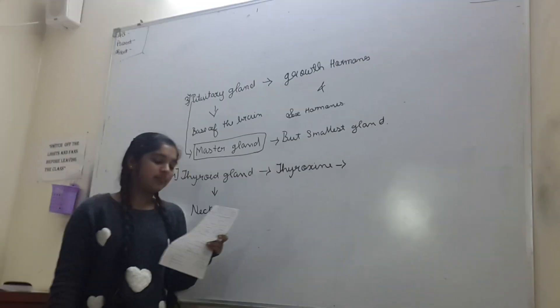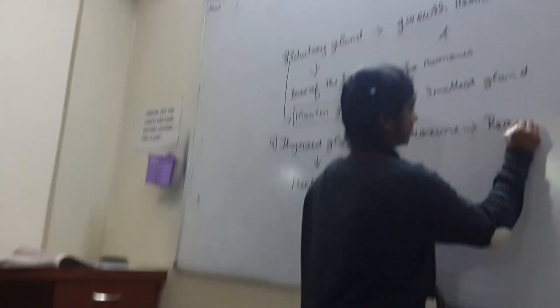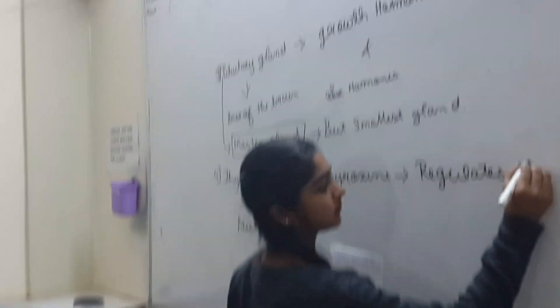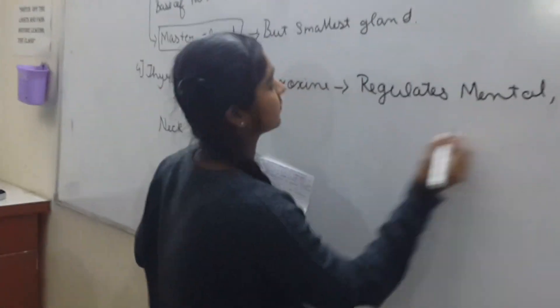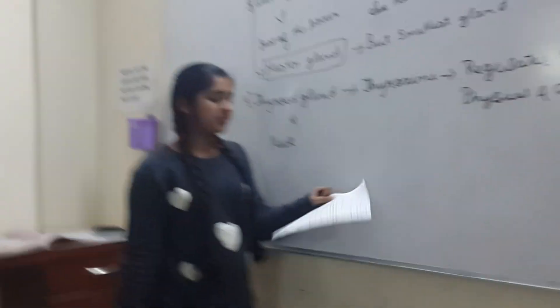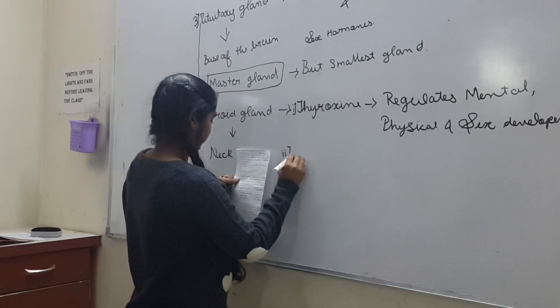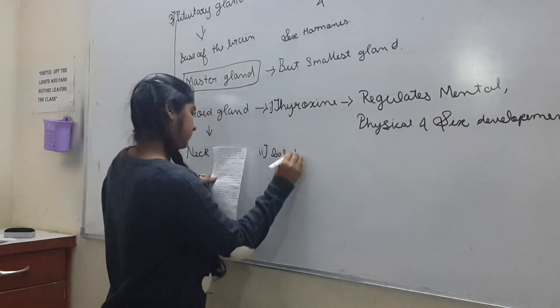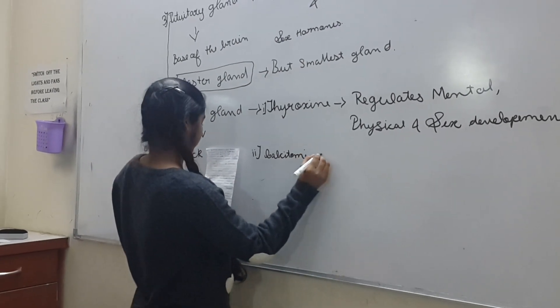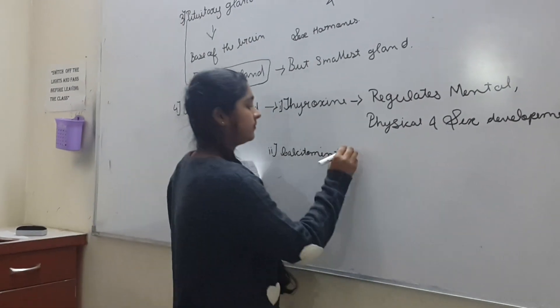Thyroxine regulates our mental, physical, and sexual development. The second hormone secreted by the thyroid gland is calcitonin, which maintains the calcium level in the body.